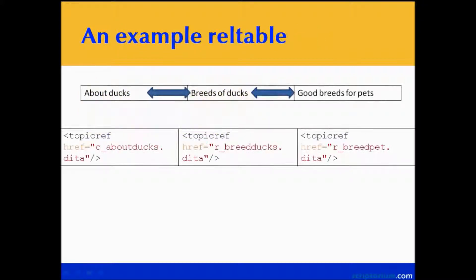So we create a rel table. The rel table, in essence, in one row, has About Ducks, Breeds of Ducks, and Good Breeds for Pets. Below that I show you what the topic reference looks like — we're using topic ref in a table with href and so on. So we're saying these three topics are related to each other.